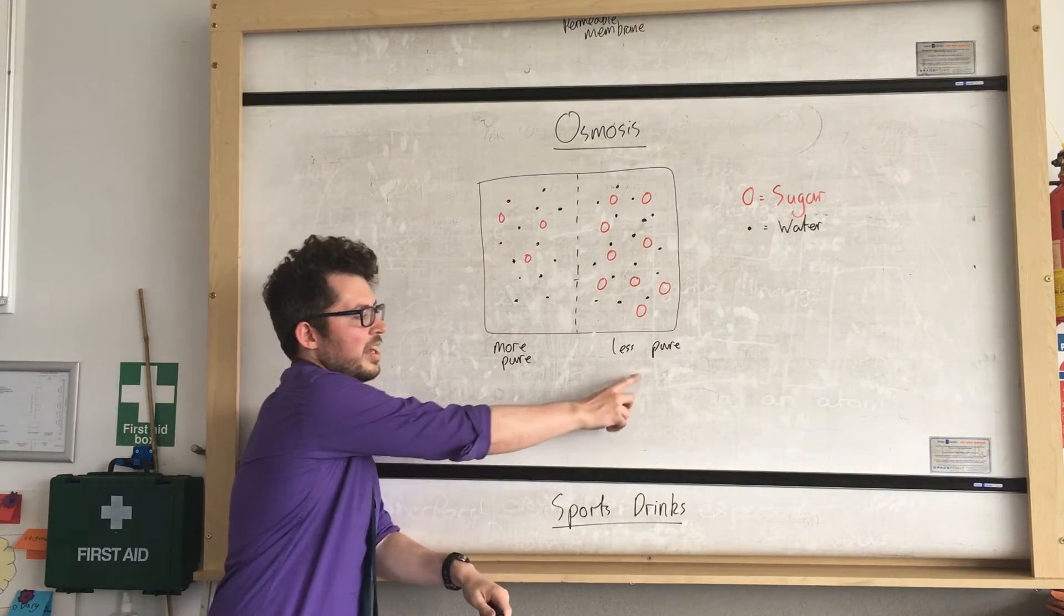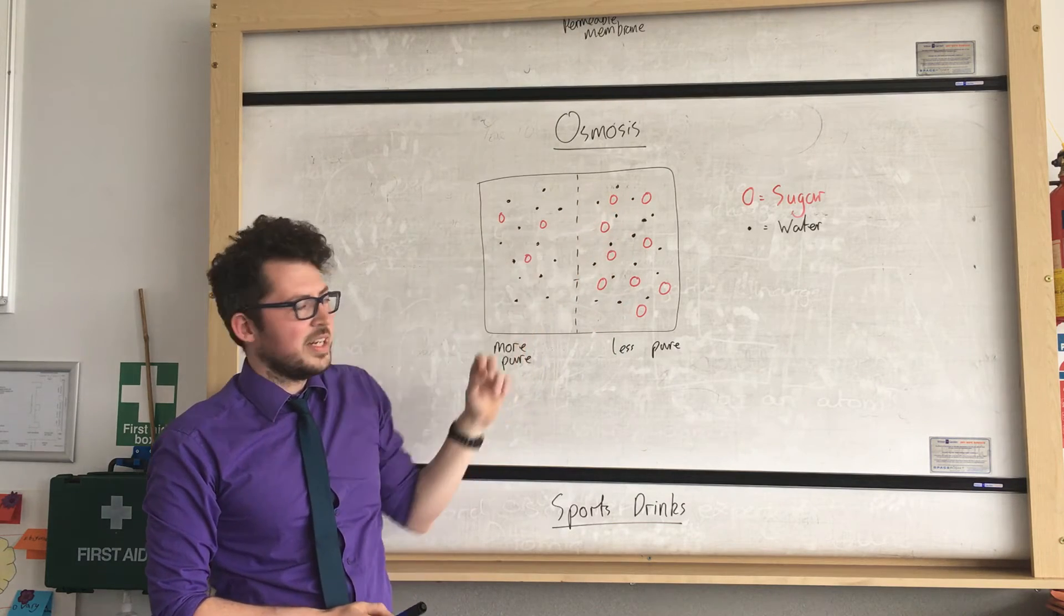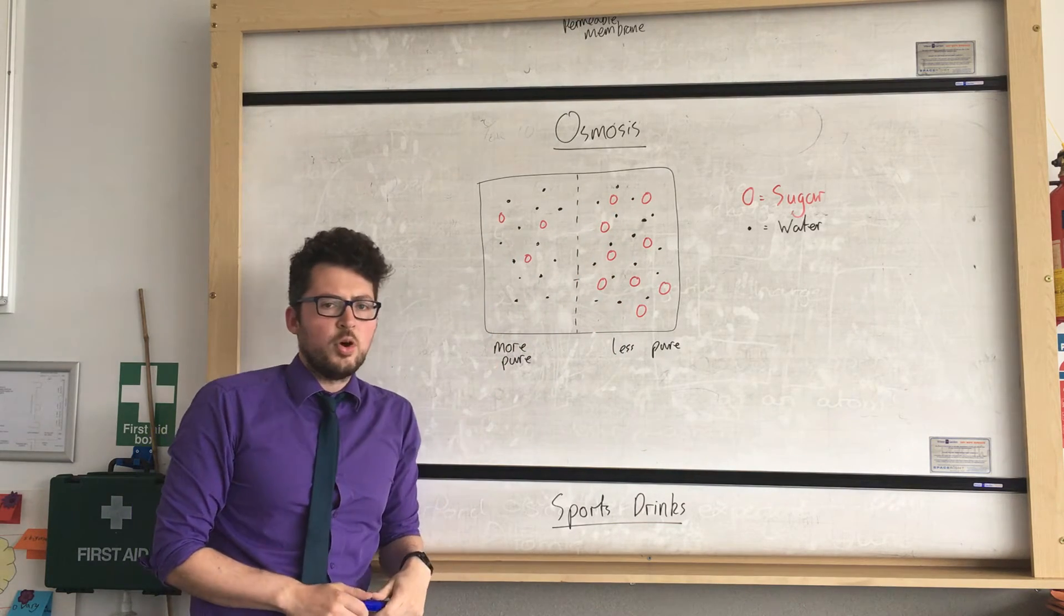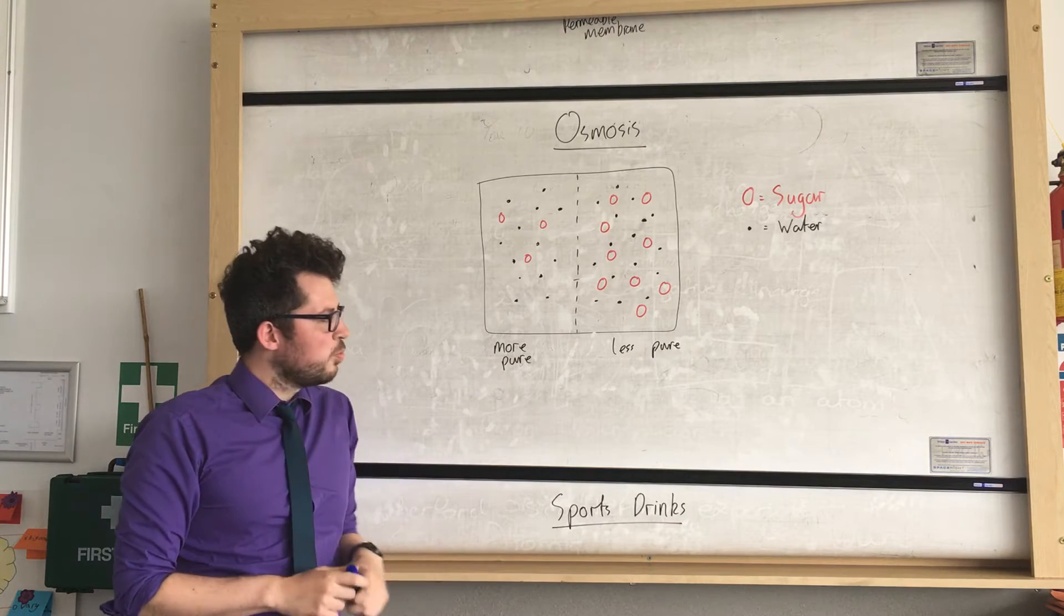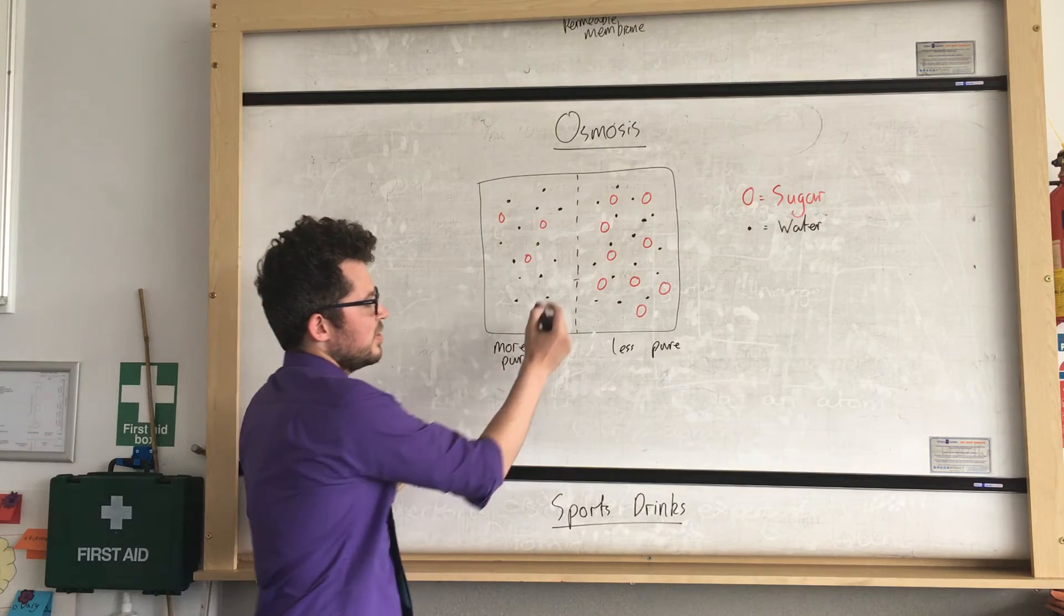Now as you can see, this side is less pure as it has a higher concentration of sugar dissolved in it. This side is more pure. So what's going to happen is water is going to move from the more pure side to the less pure side. This way.